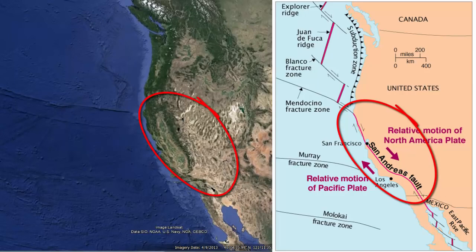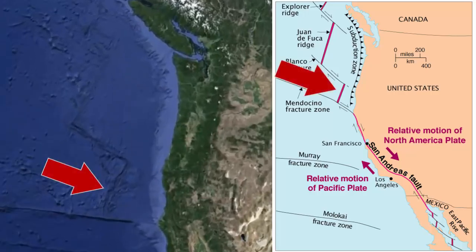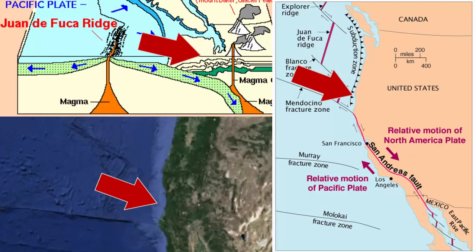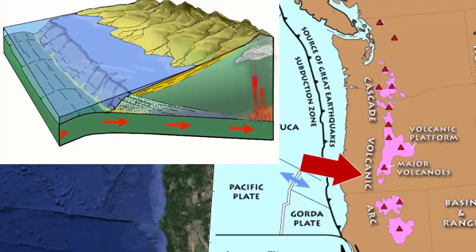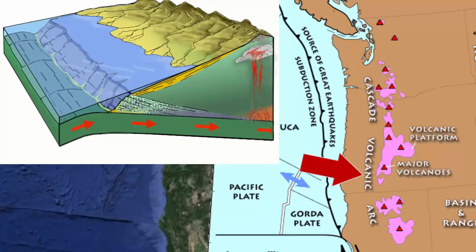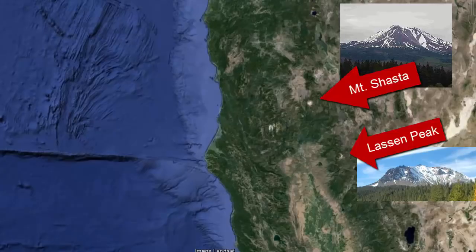As this map shows, we have a number of plate boundaries within or near the state. Notice at the northern part of California we have a divergent plate boundary, or an offshore seafloor spreading center, where new oceanic crust forms and then is pushed away. Here, along the coast, that crust collides with and then sinks under northern California. That produces a convergent plate boundary, where a plate with an oceanic crust leading edge collides with a plate with continental crust on the edge. Result? Subduction, a trench, earthquakes, and inland an active chain of volcanoes. This volcanic chain is known as the Cascade Mountains, and in California is expressed with the active volcanoes of Mount Lassen and Mount Shasta.